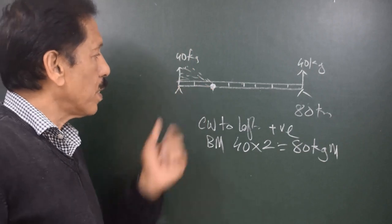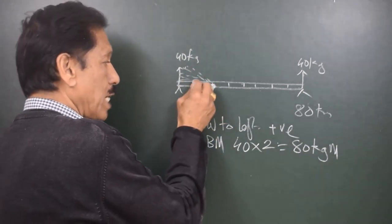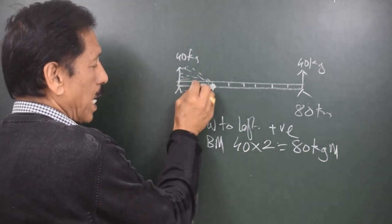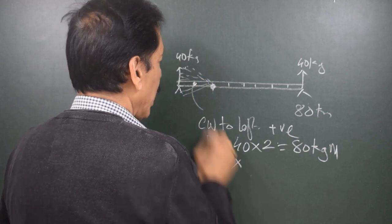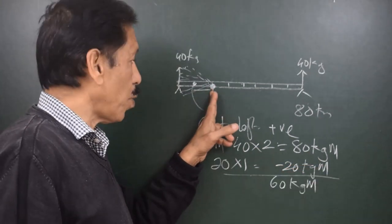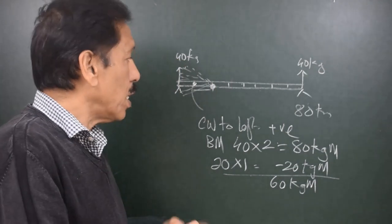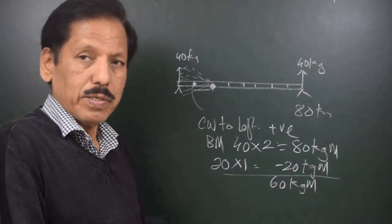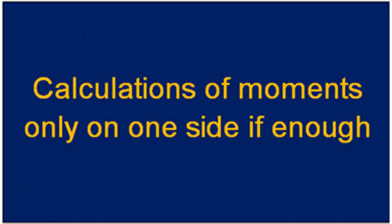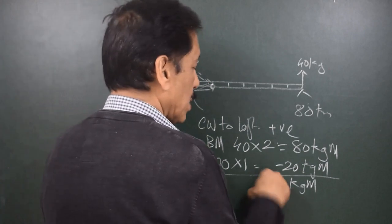There are also two beam segments weighing 10 kg each, totalling 20 kg of beam acting from the middle of 2 meters, trying to turn the beam anti-clockwise. Anti-clockwise to the left is negative, so that contribution is 20 × 1 = minus 20 kg·m. So the resultant bending moment at this point from all forces to the left is +80 minus 20 = plus 60 kg·m.